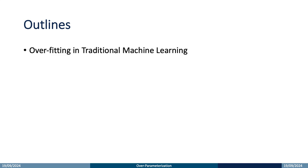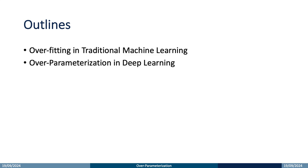Here is the outline. First, I will introduce what causes overfitting in traditional machine learning. In traditional machine learning theory, overfitting usually happens when model complexity is high. However, when model complexity is extremely high, such as in deep learning models, a new phenomenon contrary to overfitting will happen. This phenomenon is called overparameterization.